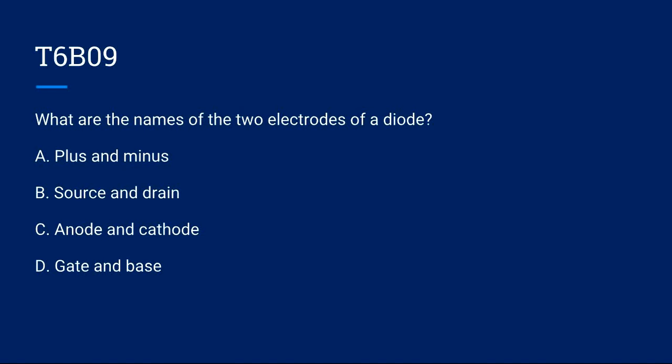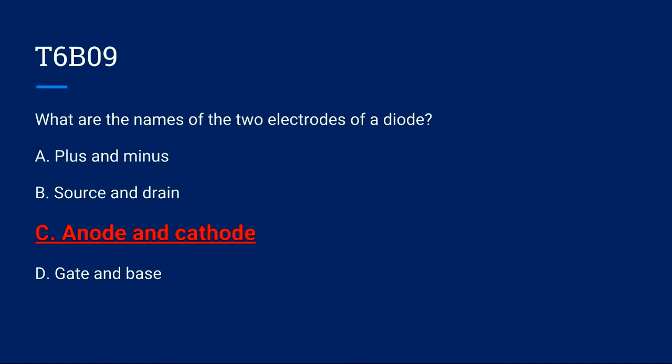T6B09: What are the names of the two electrodes of a diode? A, plus and minus. B, source and drain. C, anode and cathode. Or D, gate and base? The correct answer is C, anode and cathode.